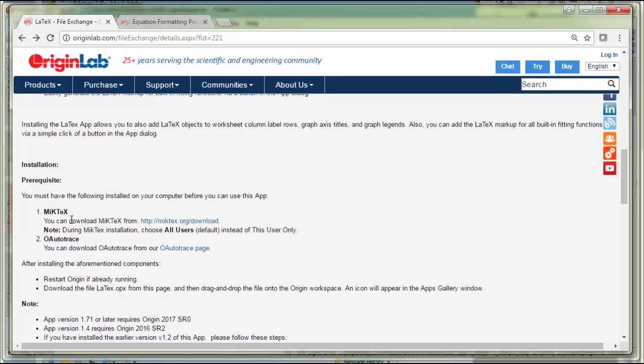One is MIGTECH, which is the engine used for converting LaTeX expressions to a raster image, and OAuthotrace, which is a free download available from our website for converting the raster image to a vector object which is then placed in Origin.